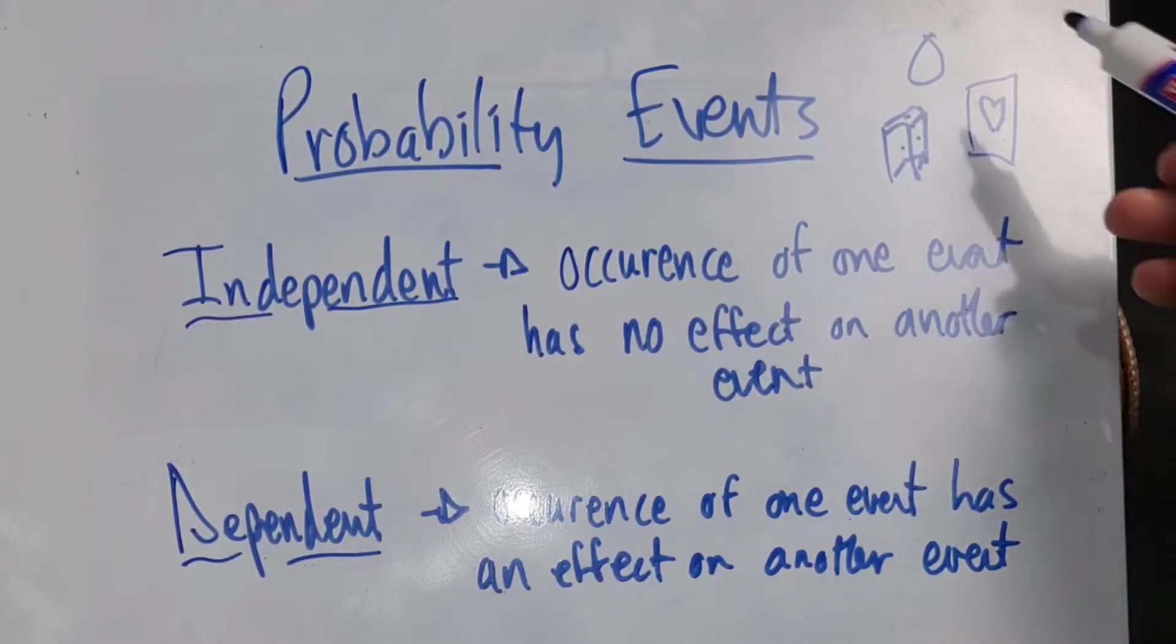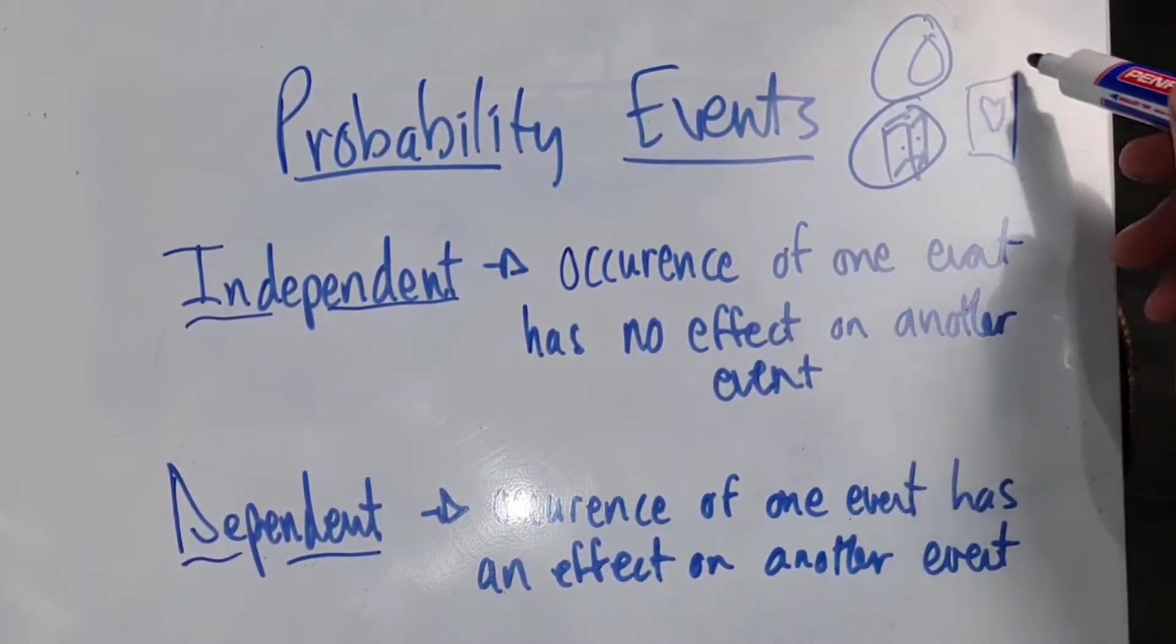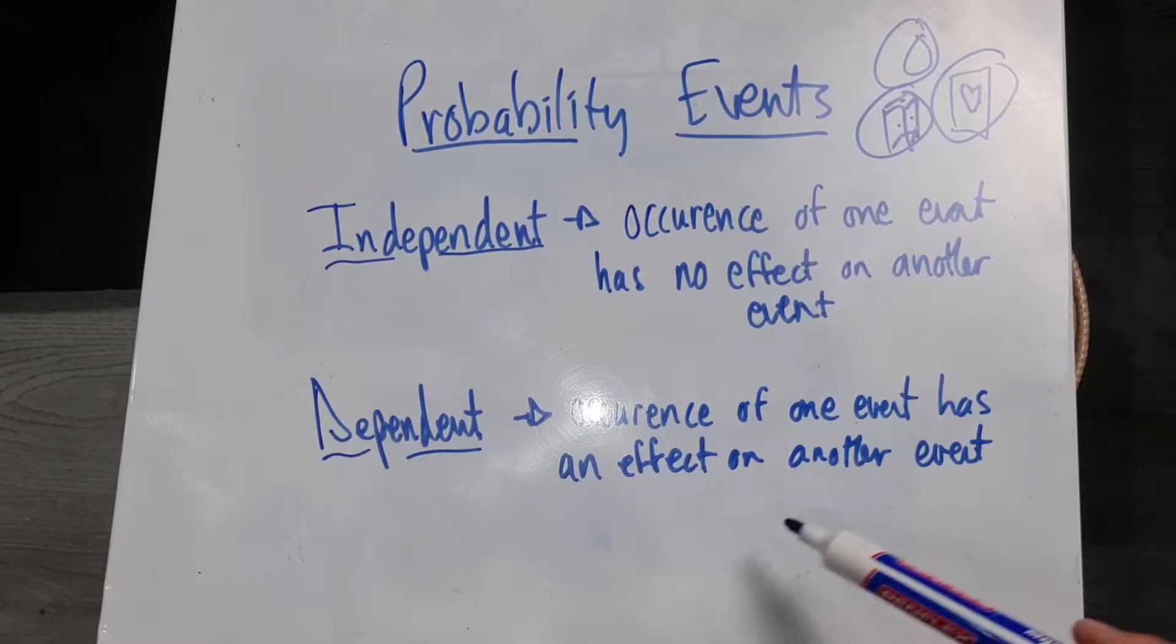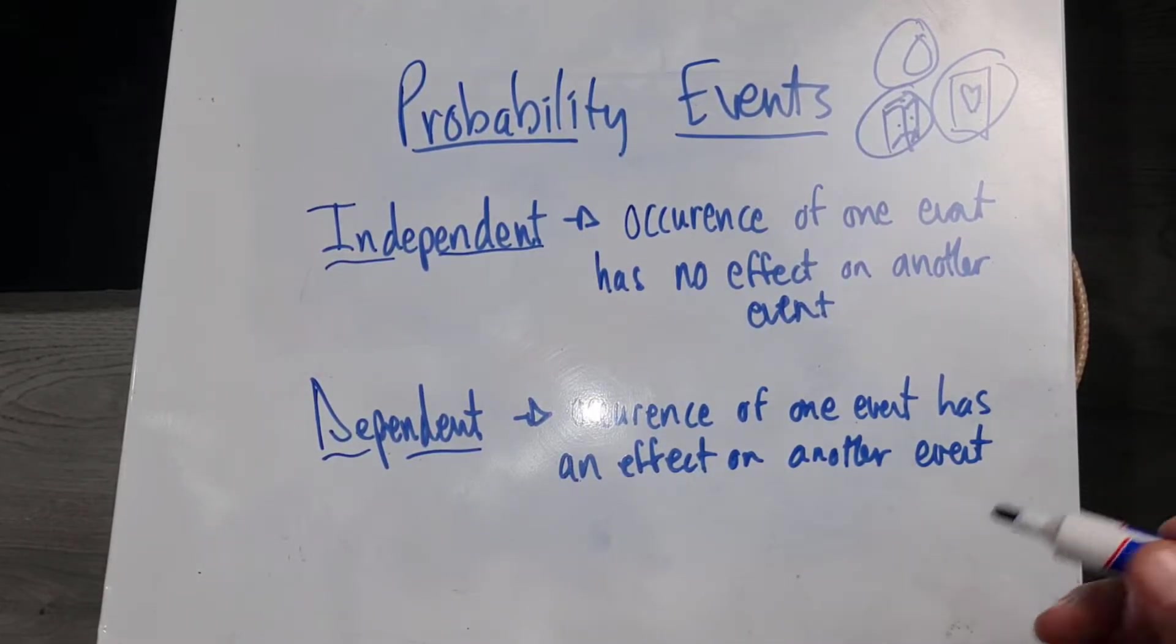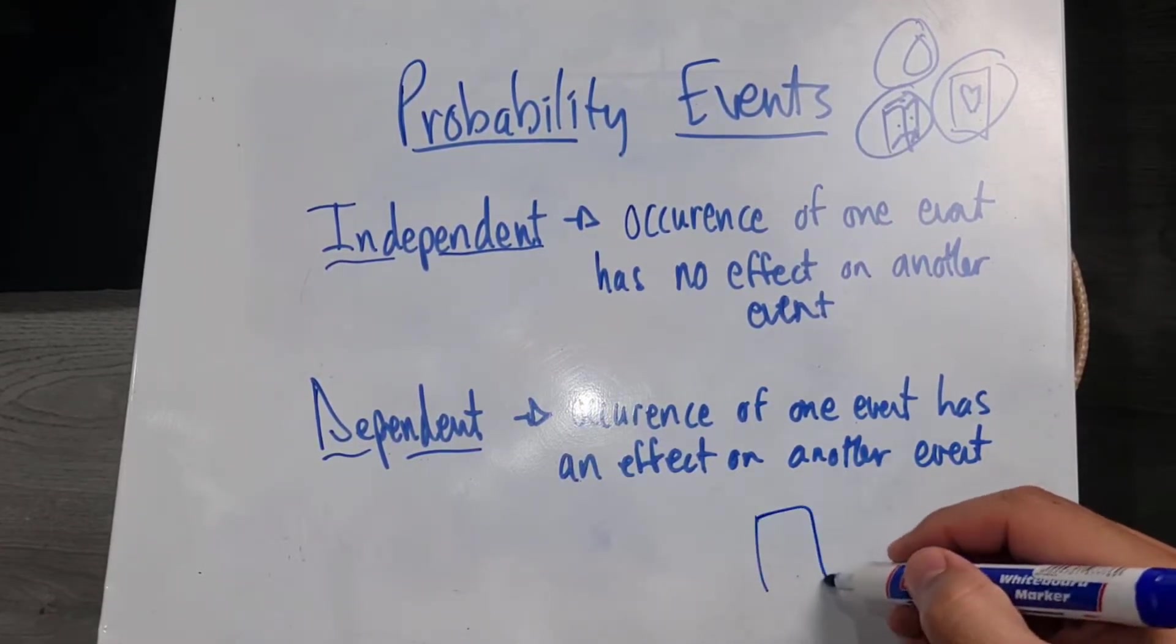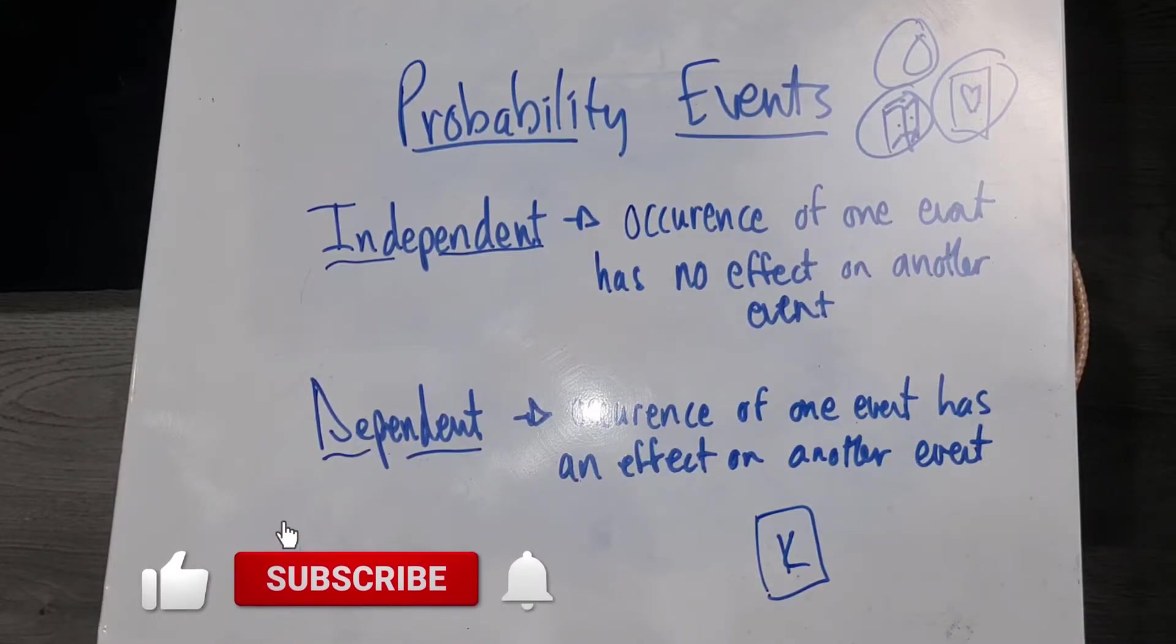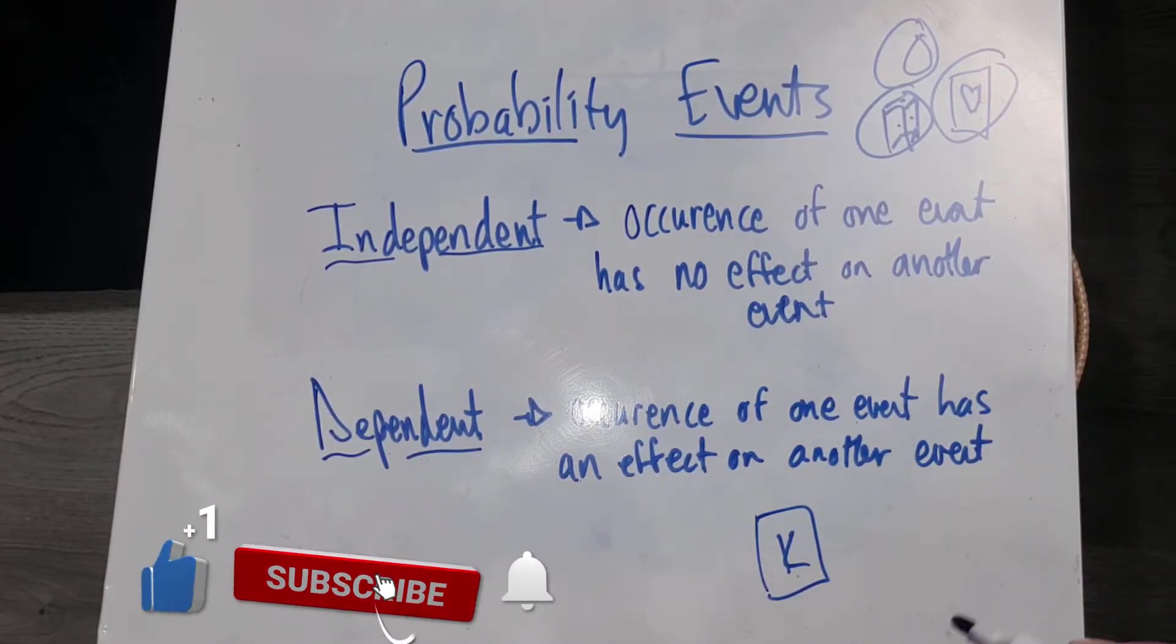However, with the dependent events, the occurrence of one event has an effect on another. So for example, if I'm busy with a pack of cards and I pull out one king, my chances of pulling out another king become less. Okay, because it's all of the same deck of cards.